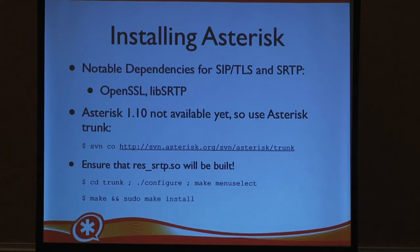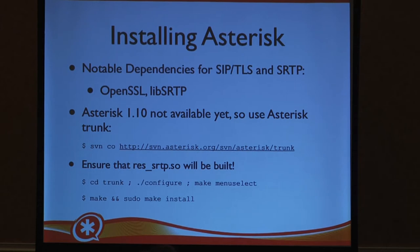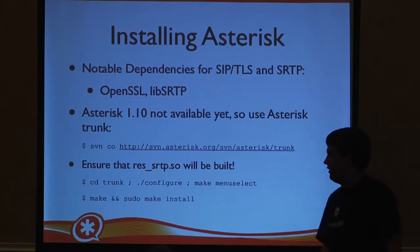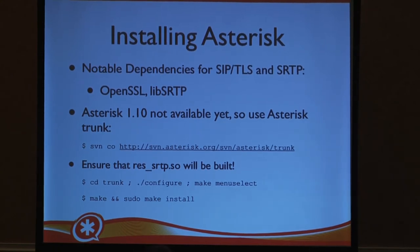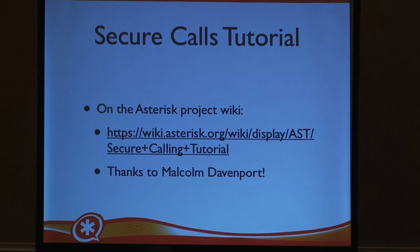Step one: you've got to install Asterisk. Since we're using Asterisk 1.10 and we haven't even released the first beta, you've got to grab it from Subversion. You've got to build it; there are some notable dependencies. OpenSSL is going to be on virtually every system — you probably already have that. LibSRTP is not something you likely have, so you have to make sure you install that. There's a build configuration utility included with Asterisk called MenuSelect — run that and make sure the secure RTP module will be built. There's a really good tutorial for setting up encrypted phone calls on our wiki — Malcolm Davenport wrote that one.